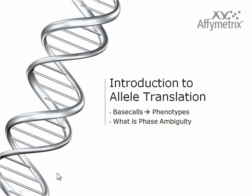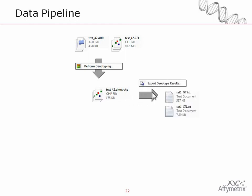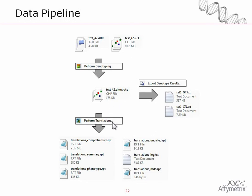This section is an introduction to allele translation and we'll cover the basics of going from raw base calls to phenotypes, and we'll also describe what phase ambiguity is. The basic data pipeline in DMET console is to take a pair of files for each sample — a sample file with sample information and a cell intensity file — and for each pair of files perform basic genotyping to generate a chip file. From here you could export the raw genotype results, getting base calls for every marker in the underscore GT file and copy number information in the copy number file. This is the minimal data pipeline. However, one of the other things you can do starting with the raw genotypes is to perform translation to further digest the genotypes into commonly recognized star allele names and phenotypes.